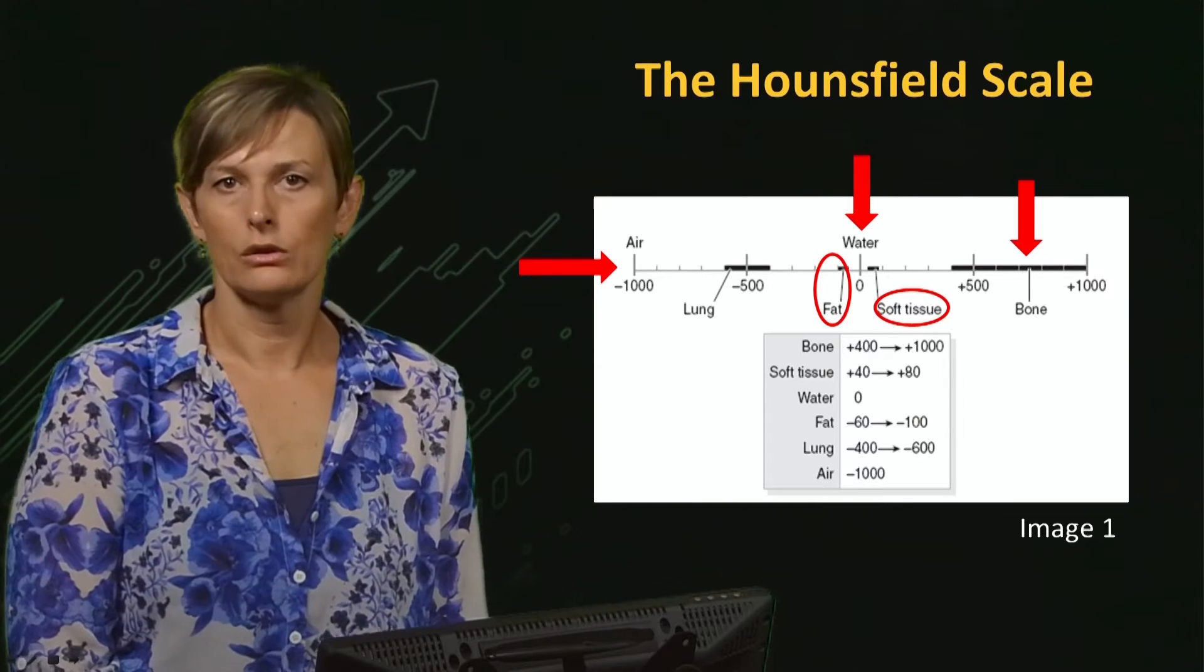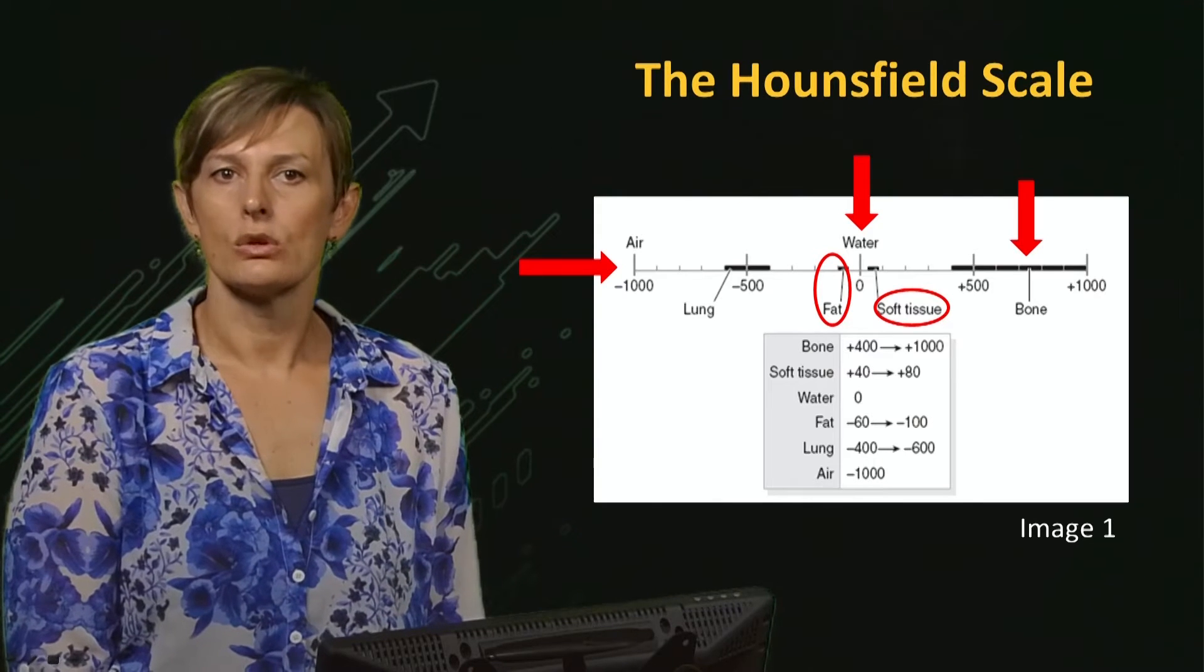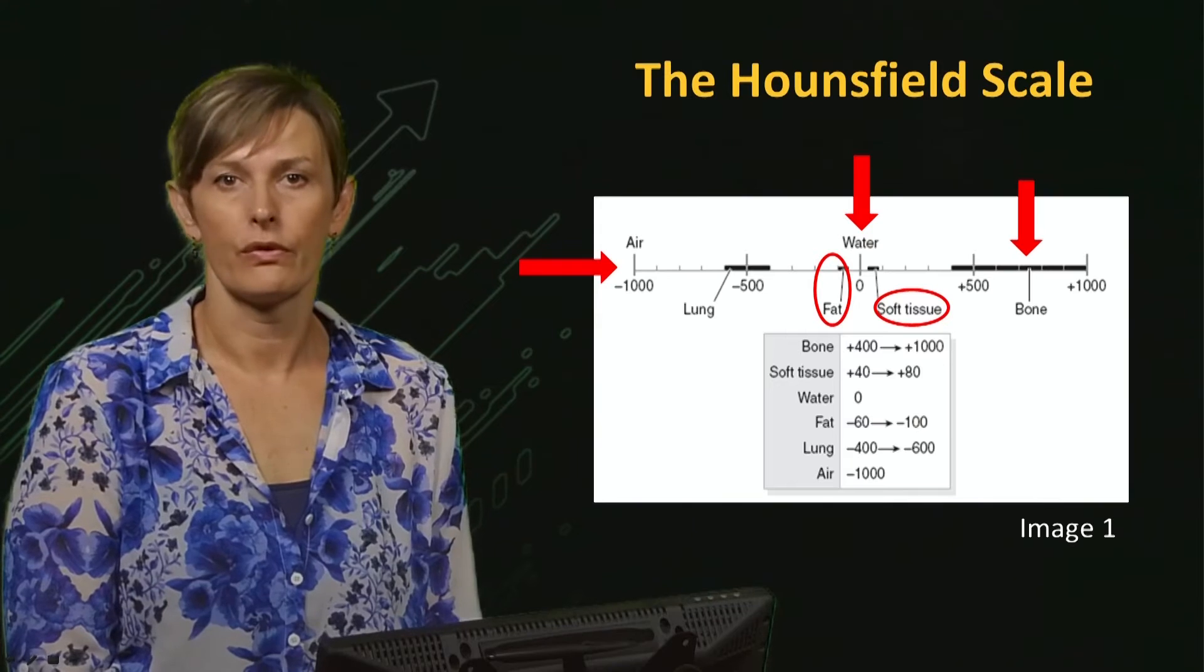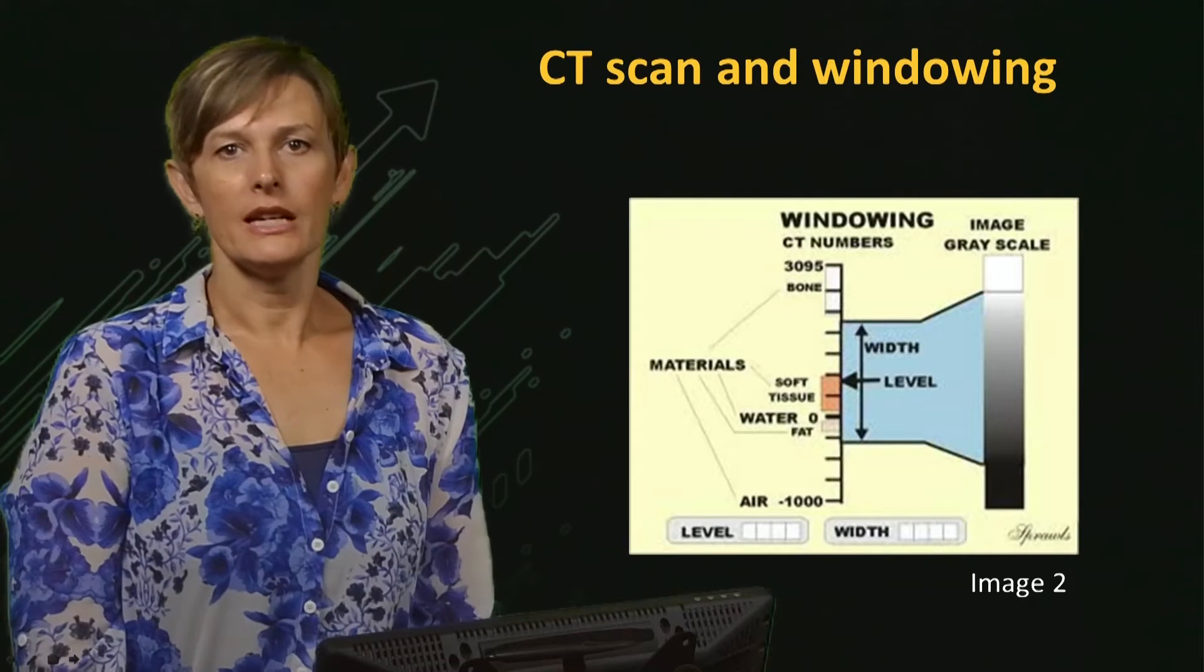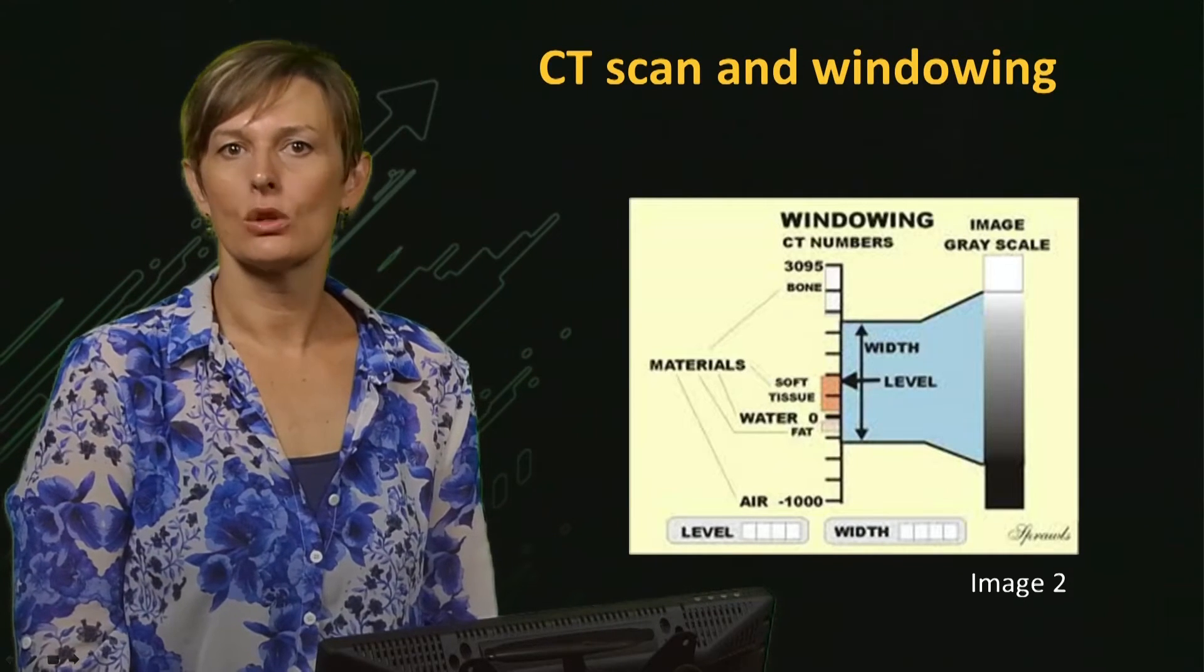As usual, the technology has improved a lot. In the new scanners, the scale can now extend in the positive direction to about plus 4000, which represents very dense metal. The range of HU values or CT numbers displayed in a CT image is called window.